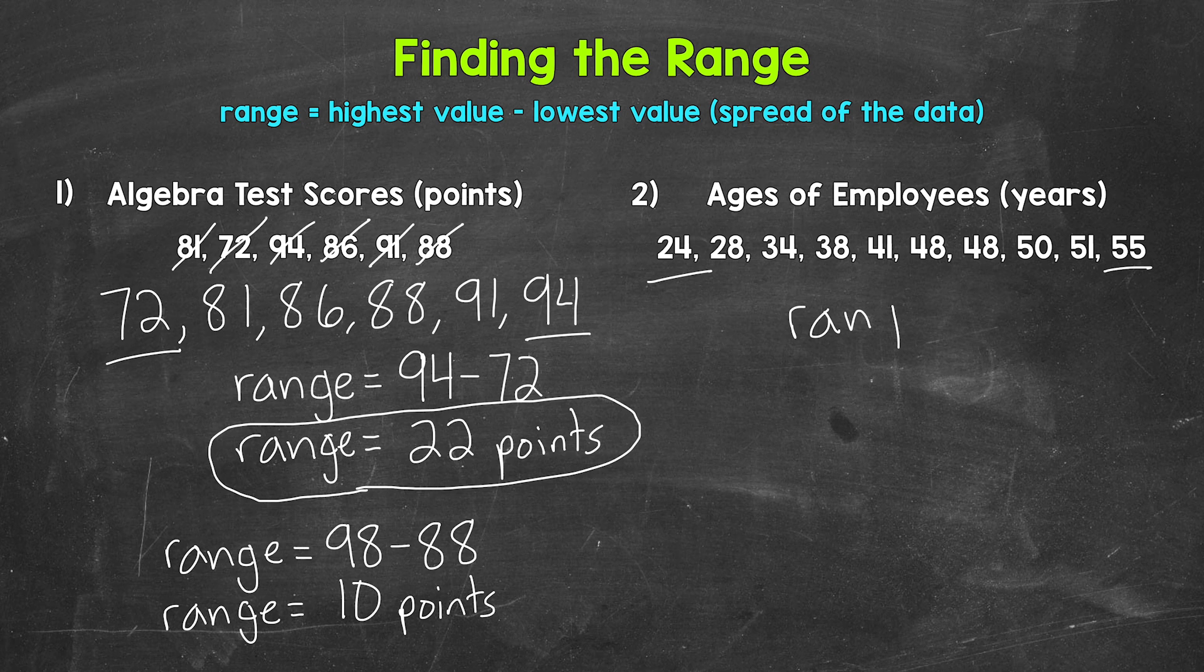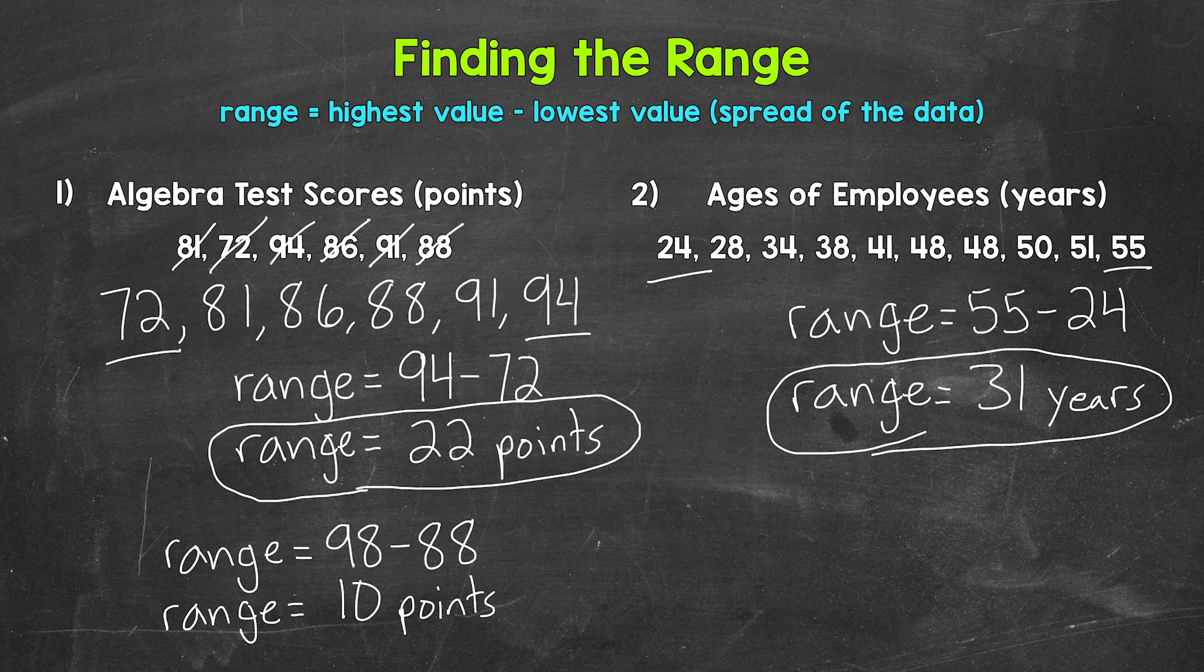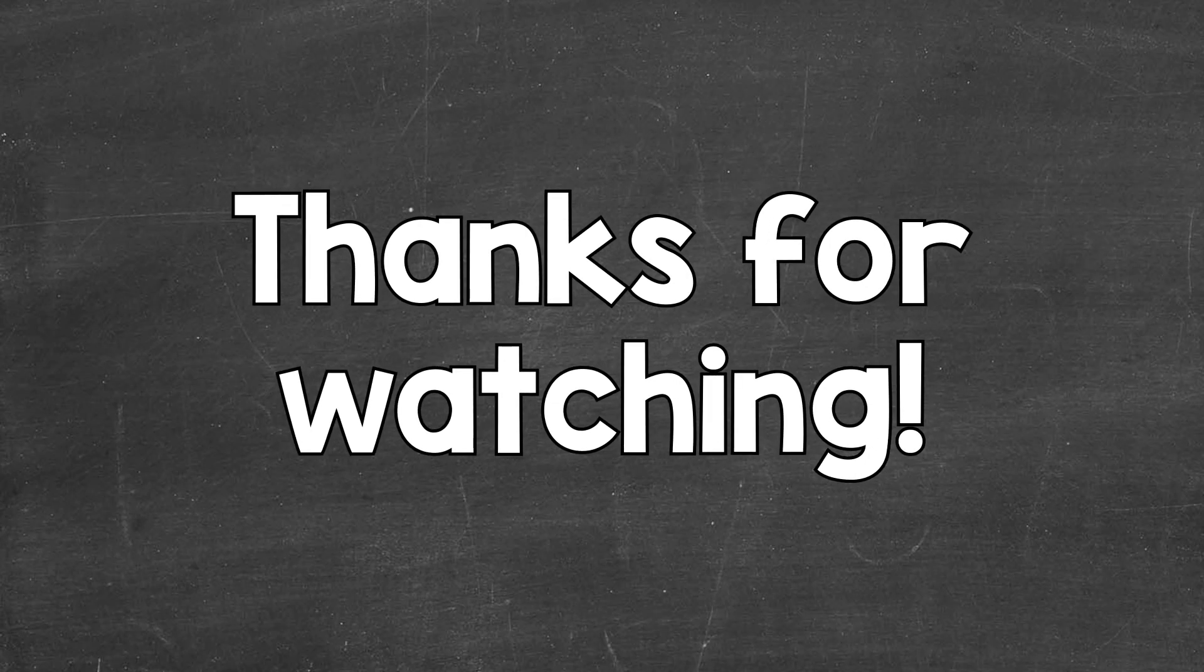So we need to do 55 minus 24. 55 minus 24 gives us a range of 31, and this is years. The range of the ages is 31 years. So there you have it. There's how to find the range. I hope that helped. Thanks so much for watching. Until next time, peace.